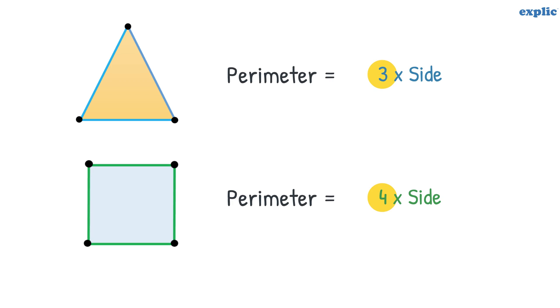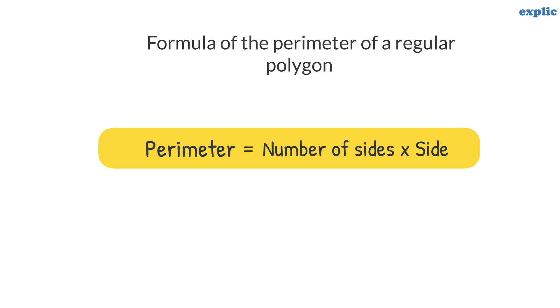In both cases, to get the perimeter, the length of the side is multiplied by the number of sides. Hence, the formula of the perimeter of a regular polygon is the number of sides multiplied by the length of the side.